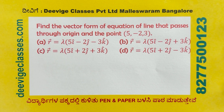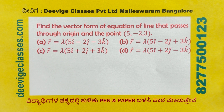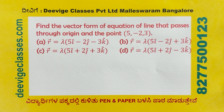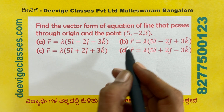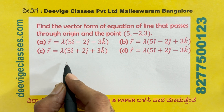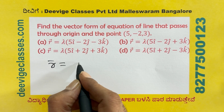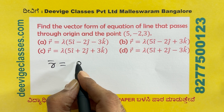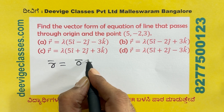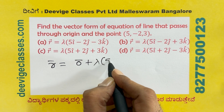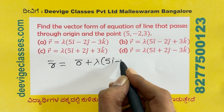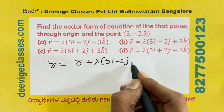Equation of the line that passes through the origin and the point (5, minus 2, 3). Since it passes through the origin, vector a equals 0. So R equals 0 plus lambda (5i minus 2j plus 3k), which simplifies to R = lambda (5i minus 2j plus 3k).